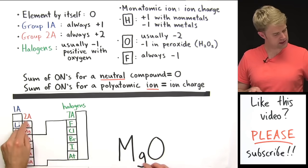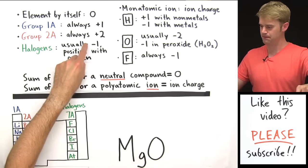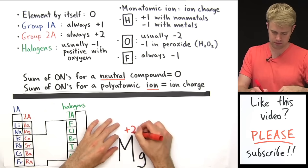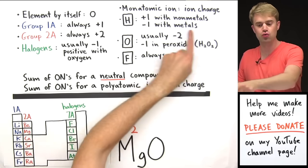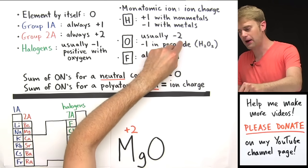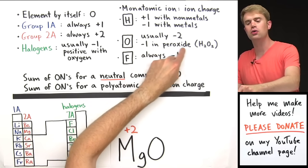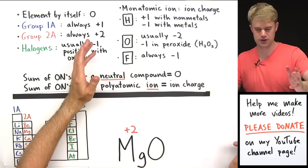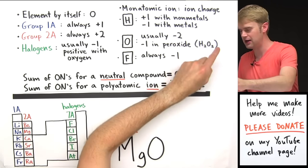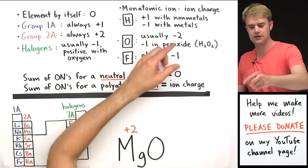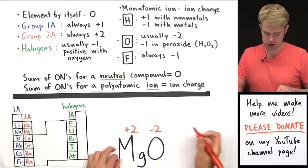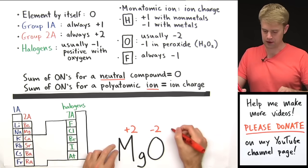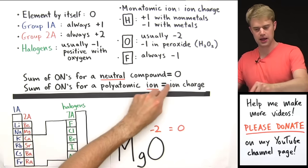MgO. Mg is in group 2A in the periodic table, and group 2A elements are always plus two. Oxygen has a rule: it is usually minus two, and it is minus one in peroxide. H2O2, hydrogen peroxide, is the most common peroxide. But this oxygen is definitely not in hydrogen peroxide, so its oxidation number will be minus two. Plus two for Mg, minus two for O, and they add together to make zero because this is a neutral compound.